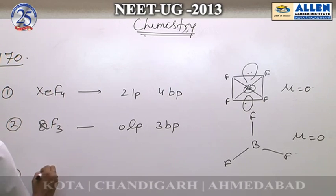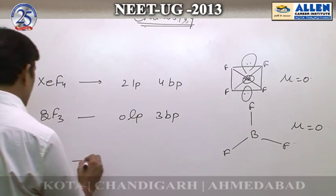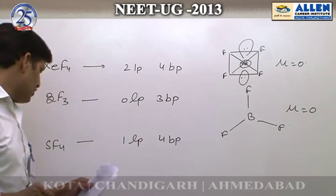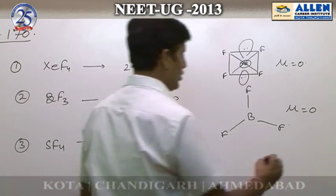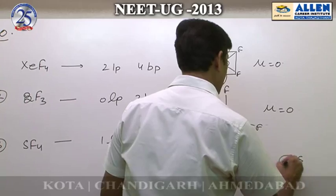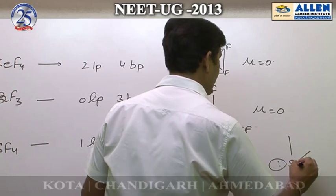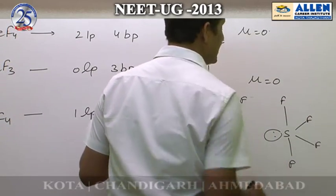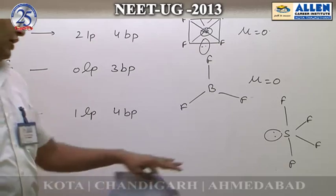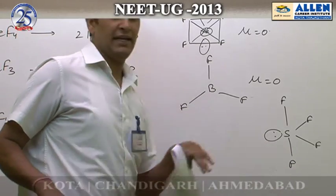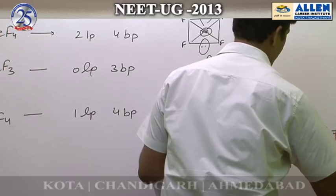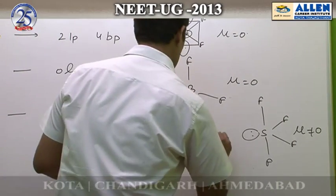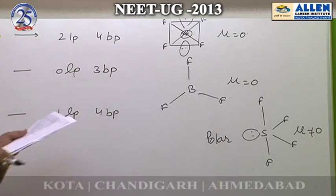Third option: SF4. In SF4, there is 1 lone pair and 4 bonding pairs. Drawing the structure of SF4 — it is not symmetrical. It is very obvious that mu ≠ 0, and the molecule is polar.